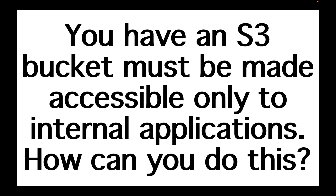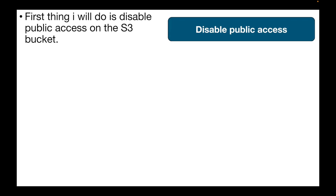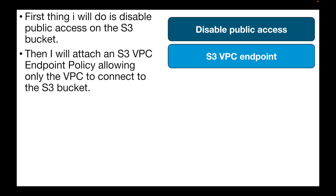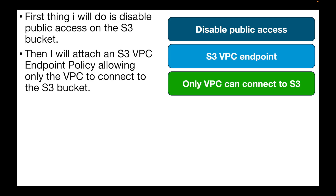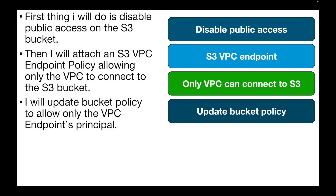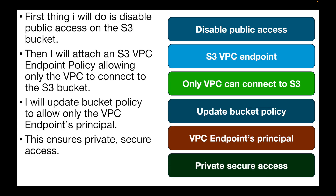The next question is: you have an S3 bucket that must be accessible only to internal applications. How can you do this? First, disable public access on the S3 bucket. Then attach an S3 VPC endpoint policy that allows access only from the VPC to the required S3 bucket. Update the bucket policy to allow access only from the VPC endpoint principal, ensuring private and secure access to the S3 bucket only from your internal applications.